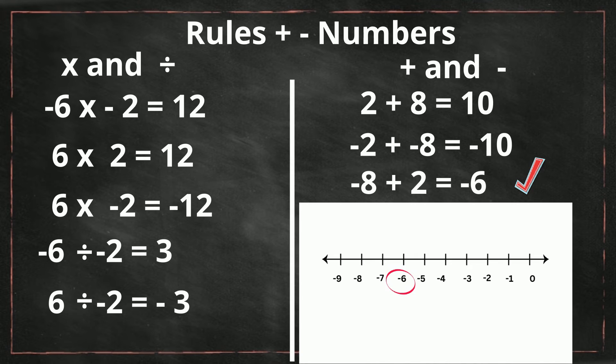So again, different signs take the sign of the larger one. Negative 8 plus 2. You actually subtract the 2 from it. It becomes negative 2.